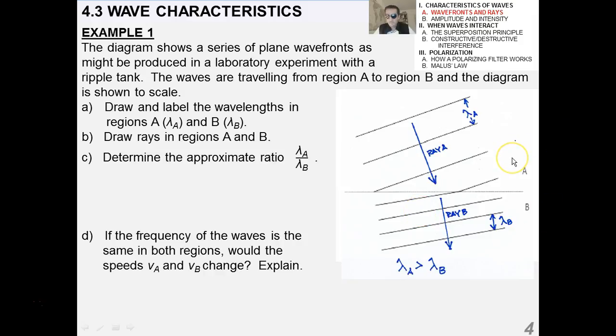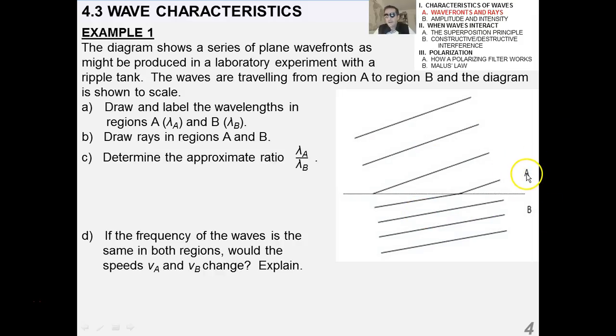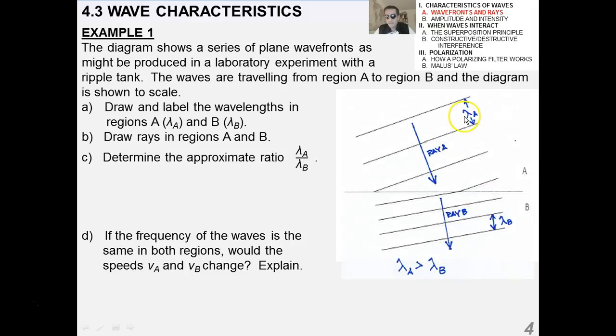Now, you should be able to infer, simply from the original diagram, that region B, well, if this is water, region B is shallower than region A, right? Because the waves are going slower in region B. Anyway, here's lambda A and lambda B. They want you to draw rays in regions A and B. There you go. The wavefronts are already provided for you.